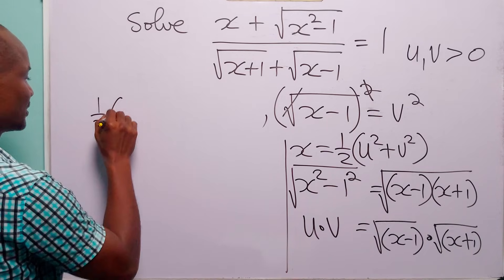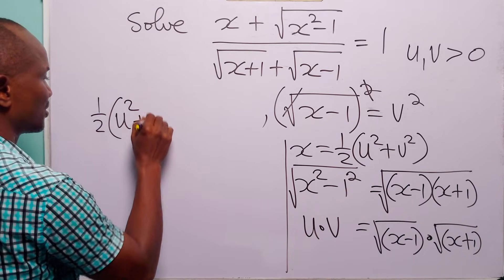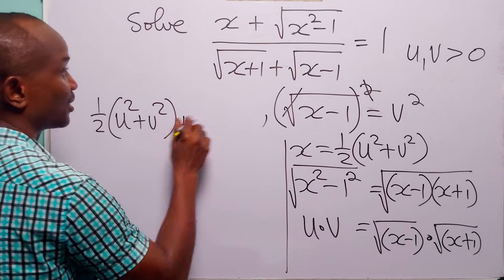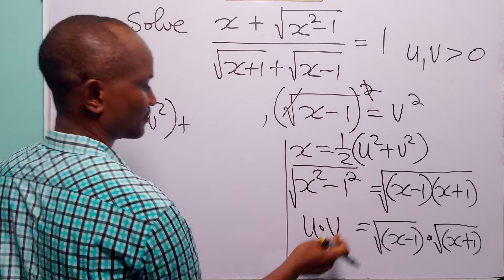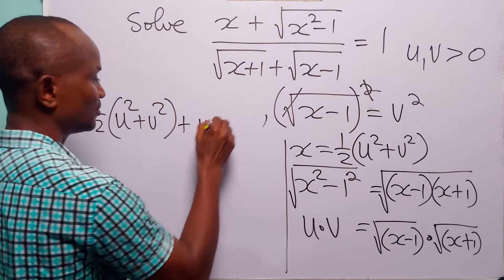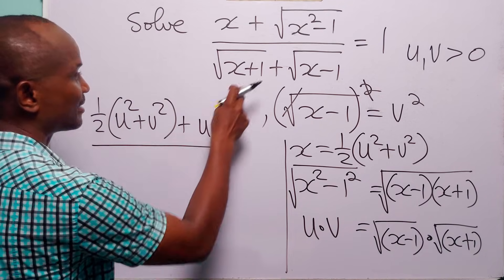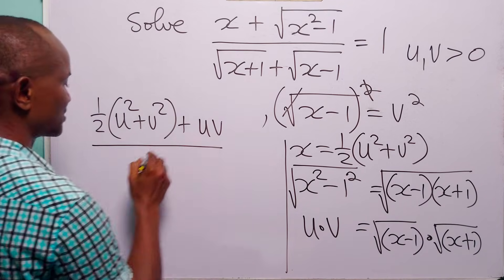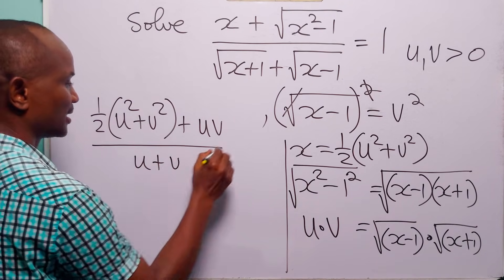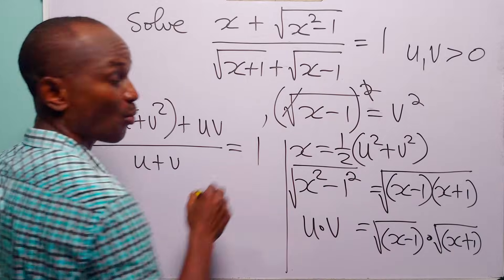So now we have that the original equation is: half times (u squared plus v squared) plus uv, all divided by (u plus v), is equal to 1.